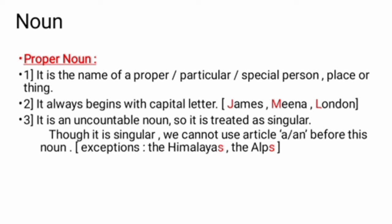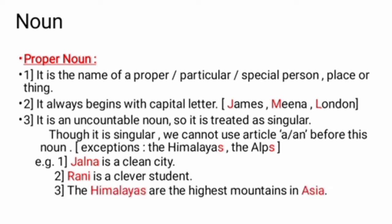See the example number one. Jalna is a clean city. Here, Jalna is the name of a city. Rani is a clever student. Rani is the proper noun. The Himalayas are the highest mountains in Asia. Here, two nouns are proper nouns. Himalayas and Asia.